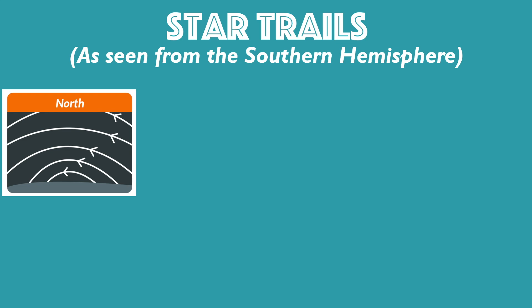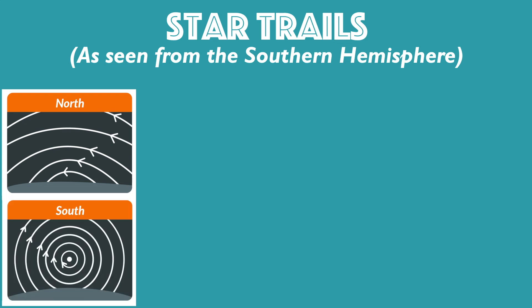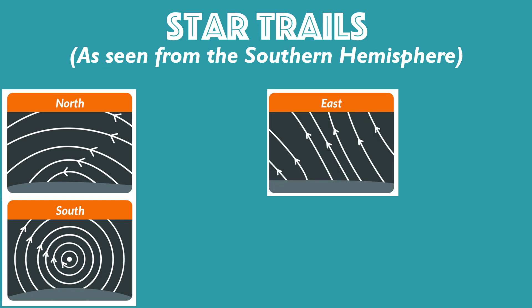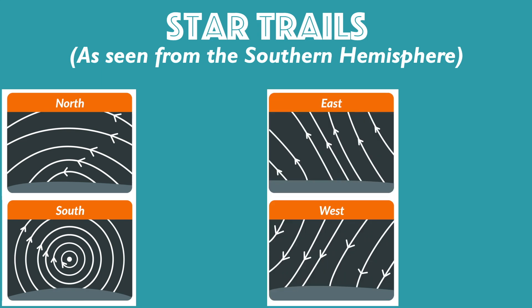Instead, these observers will see the south celestial pole when facing directly due south. Here, the circumpolar stars trace out clockwise star trails around the south celestial pole. To the east and to the west, the stars continue to rise and set as expected. However, they are angled opposite to the direction of the rising and setting stars of the east and west on the northern hemisphere.